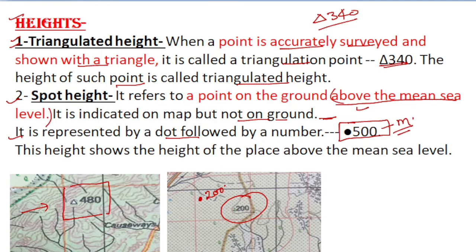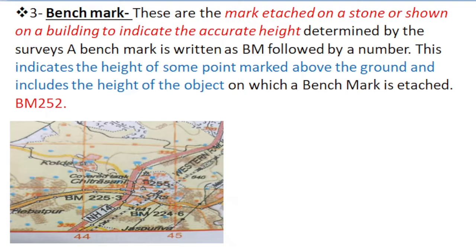We will proceed to the next height. Third is the benchmark. These are marks etched on a stone or shown on buildings to indicate the accurate height determined by surveyors. A benchmark is written as BM followed by a number.